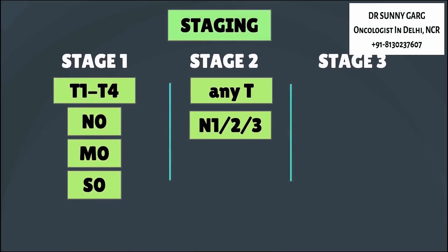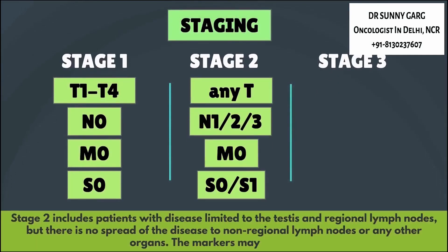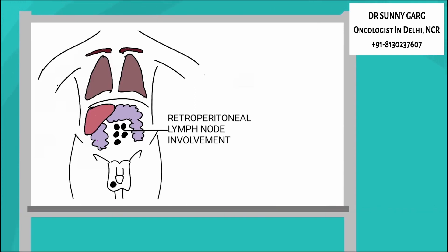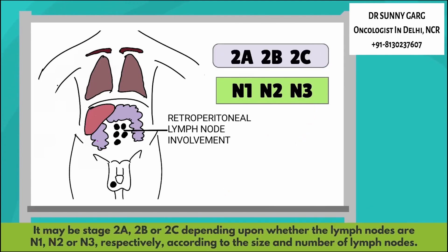Stage 2 includes patients with the disease limited to the testes and the regional lymph nodes, but with no spread to non-regional lymph nodes or any other organs. The markers may be S0 or S1. Stage 2 has disease limited to the testes and the regional or retroperitoneal lymph nodes. It may be stage 2A, 2B, or 2C depending on whether the lymph nodes are N1, N2, or N3 respectively, according to the size and number of lymph nodes.